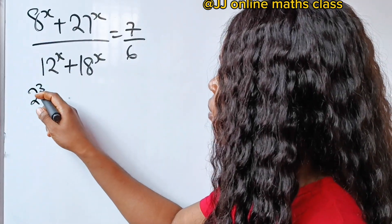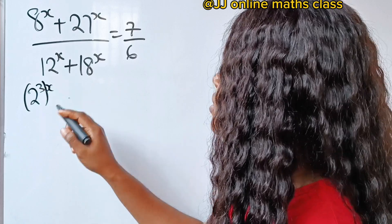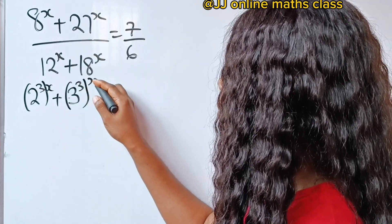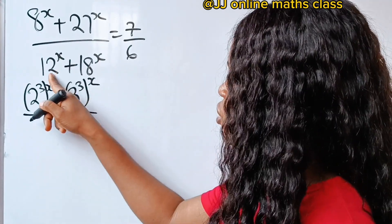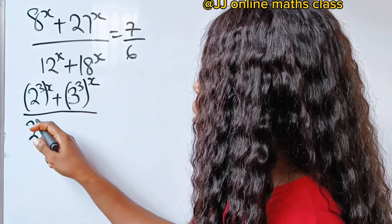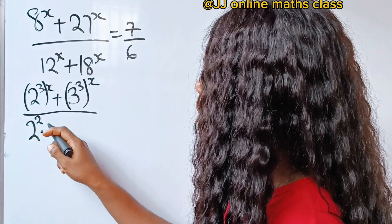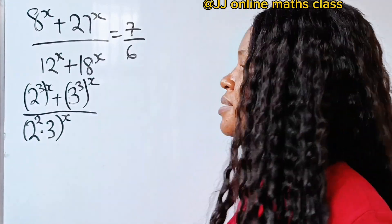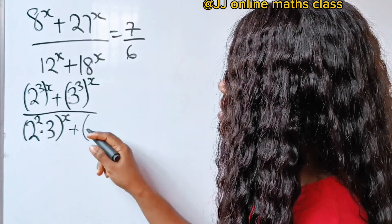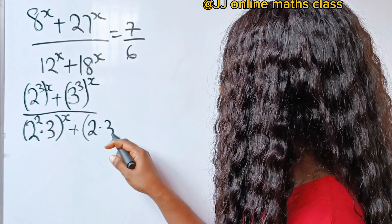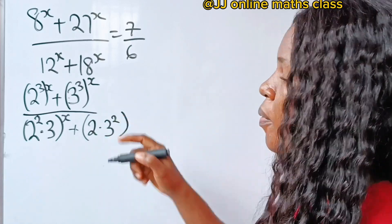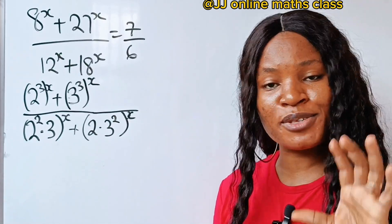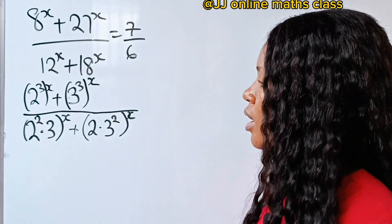So x is set in as 2 to the power of 3 raised to the power of x, plus 3 to the power of 3 raised to the power of x, divided by 12. Now 12 can be written as 2 to the power of 2 multiplied by 3, everything raised to the power of x. Since 2 to the power of 2 is 4 and 4 times 3 is 12. The next term is 2 multiplied by 3 to the power of 2, since 3 squared is 9 and 9 times 2 is 18, everything raised to the power of x.